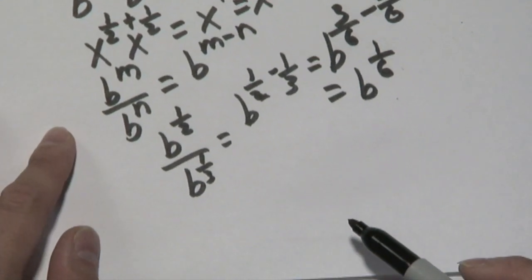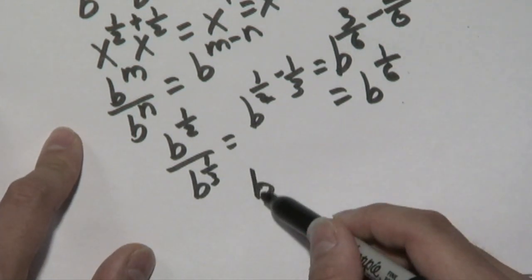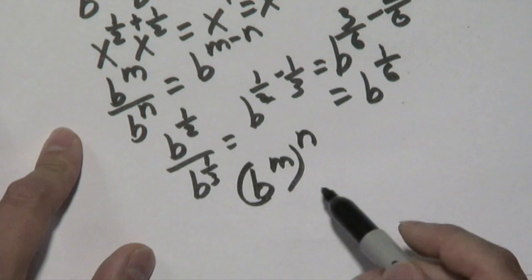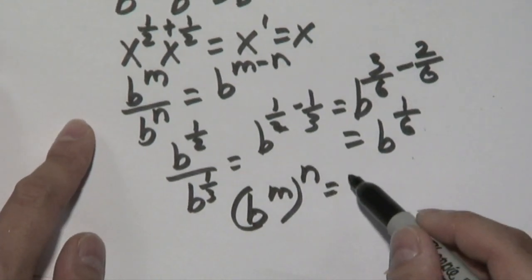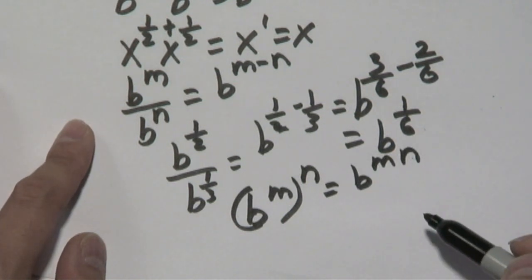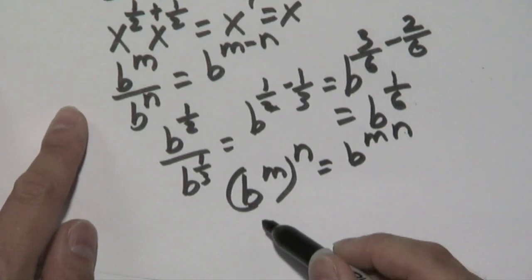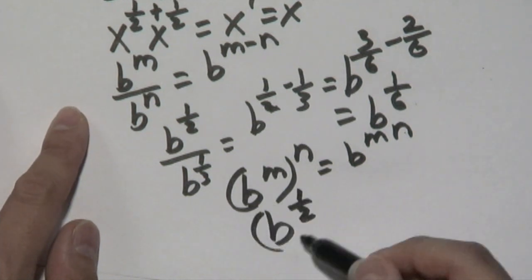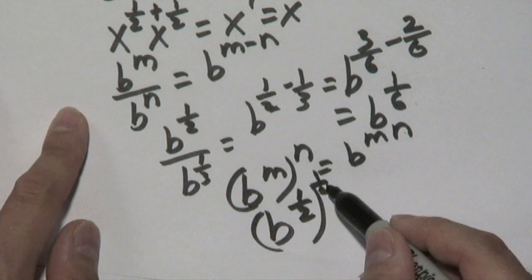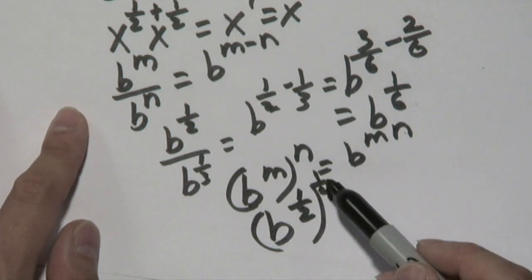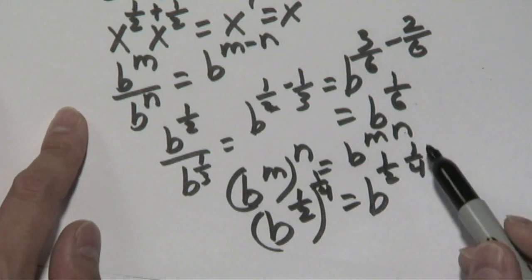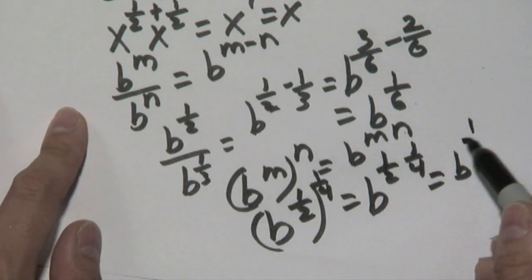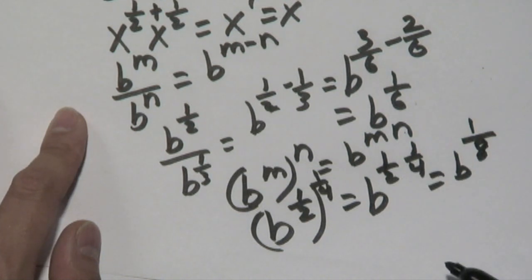And one last major property I want to talk about with you is if you have b to an exponent, and that's in turn raised to another exponent, then you would multiply those two exponents together. So, for example, if you have b to the 1 half, and it's raised to the 1 fourth, you would actually just multiply those. 1 times 1 is 1, and then 2 times 4 is going to give you 8. So b to the 1 half to the 1 fourth power is going to be b to the 1 eighth power.